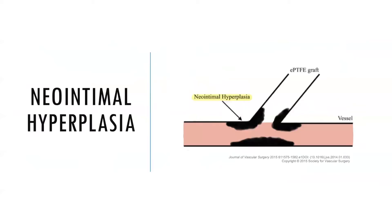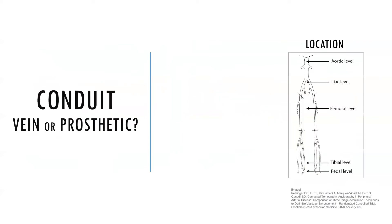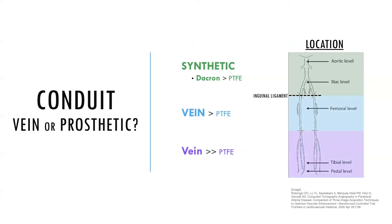Neo-intimal hyperplasia is the accumulation of cells within the graft or artery lumen, leading to narrowing or stenosis. This occurs more readily in small diameter synthetic grafts because they are more thrombogenic, more prone to triggering an inflammatory response, and there is a compliance mismatch between the synthetic graft and the native artery. Deciding between vein or synthetic conduit typically depends on the location of the bypass graft. Synthetic grafts are preferred for larger arteries with high flow environments like the aorta and iliacs, and for infrainguinal bypasses, veins are preferred.